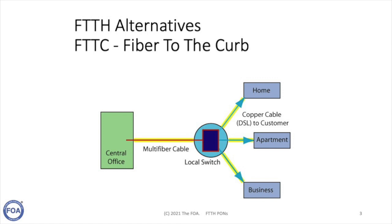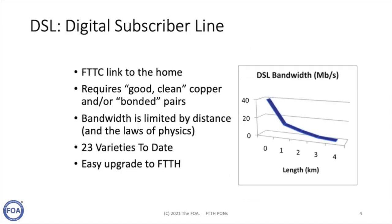Initially, the telephone companies, who owned lots of landlines made out of copper to practically every subscriber that had a phone, proposed Fiber to the Curb. The idea was you would run fiber from a central office to a local switch, typically sitting in a pedestal in a subdivision or in the basement of a building, and then use the current twisted pair copper cable to connect up to the customer. The problem is those copper cables were not really capable of delivering broadband as we think of it in 2021.